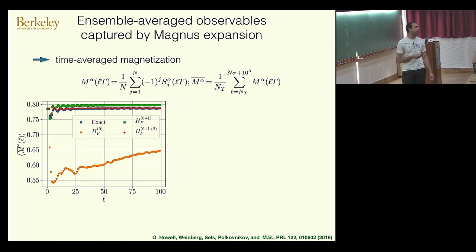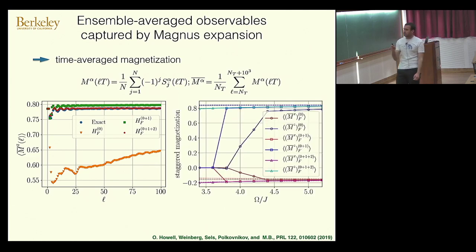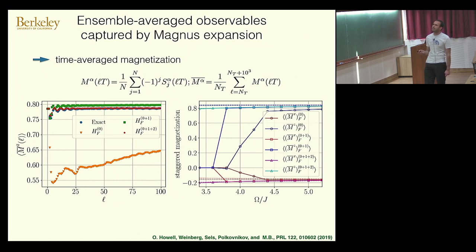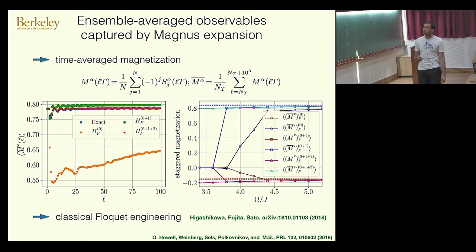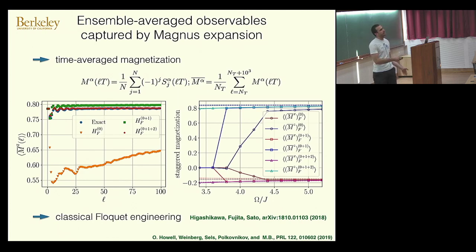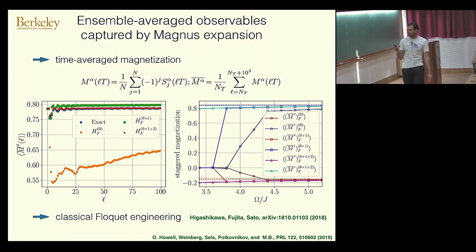At high frequencies, the diagonal ensemble matches the exact dynamics for both the z and x components of the magnetization. If the frequency is slow enough, pre-thermalization doesn't happen at all and the system goes to the infinite temperature state right away. The ensemble average in the pre-thermal plateau is captured by the predictions of the Magnus expansion. This is interesting and potentially useful because it shows how we can take ideas about Floquet engineering and transfer them from the quantum domain to the classical domain.